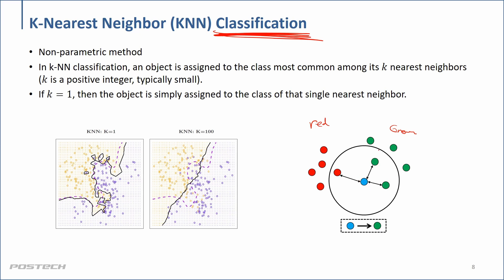Whenever we have a new data point and we need to decide whether it's red or green, with k equal to 3 we compute Euclidean distances and find the three nearest candidates. If one of them is red and two are green, then we say this point belongs to green. For some data points it will be nearly 100% obvious — this one is green, that one is red.